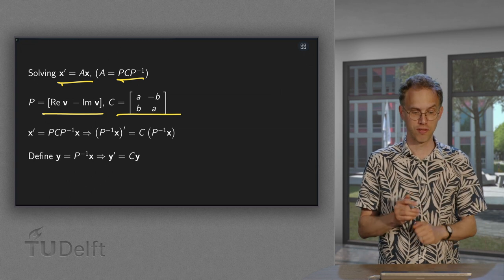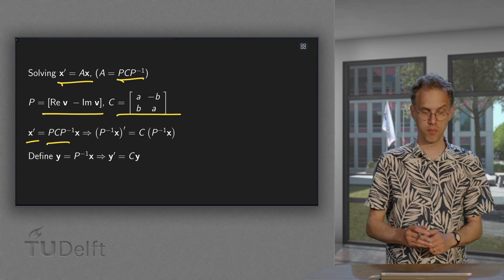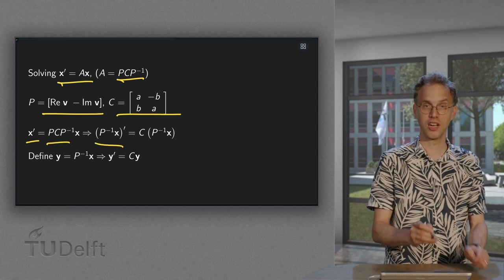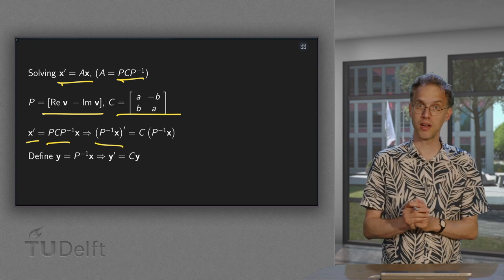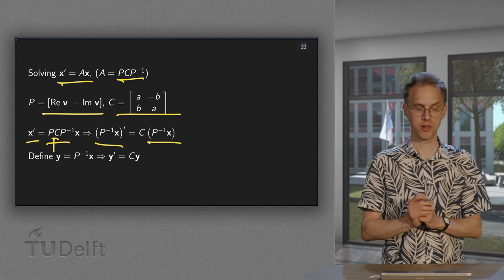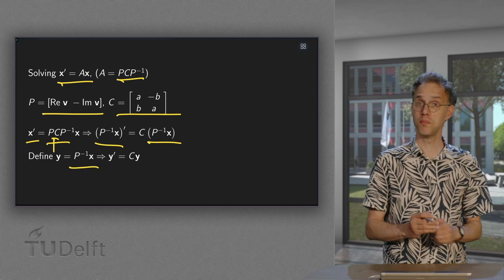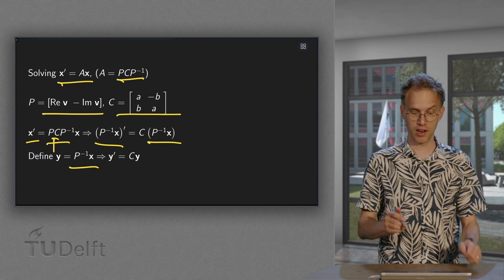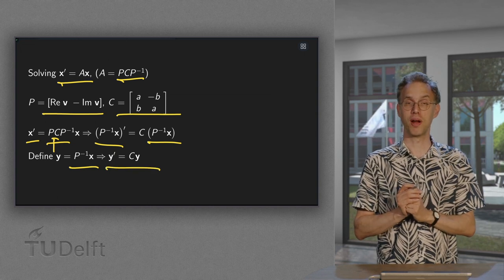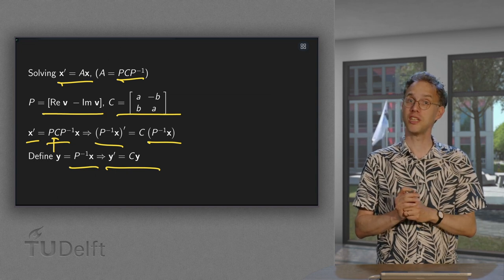Then we do the familiar trick. Starting from x' = Ax, multiply by P inverse on the left. You get P inverse x' on the left, and C times P inverse x on the right. Defining Y = P inverse x as usual, we are left with Y' = C times Y. So first we solve Y' = CY, and using that solution we will find our solution x.